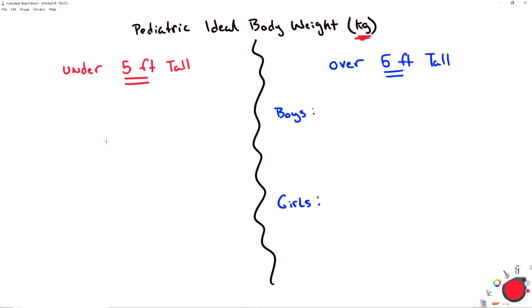All pediatrics under five feet, that's going to be height in inches, and that's going to be squared times 1.65. And that's the first part of the equation. And then once you get that answer, you're going to divide it by a thousand.